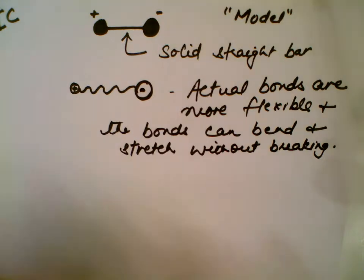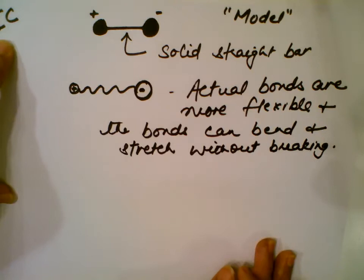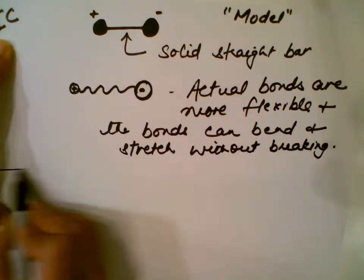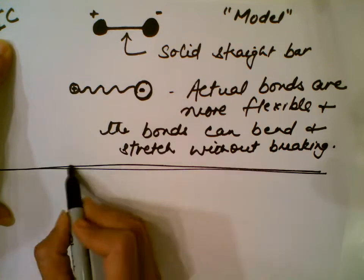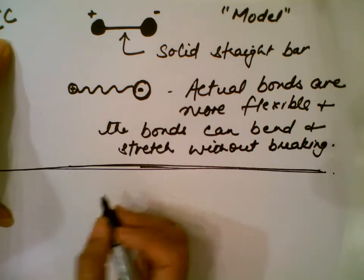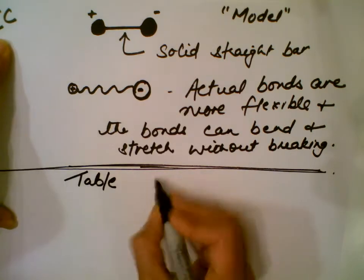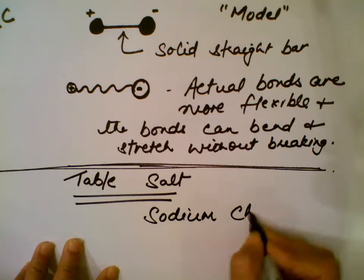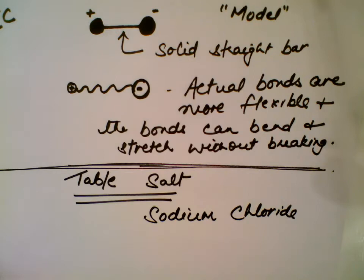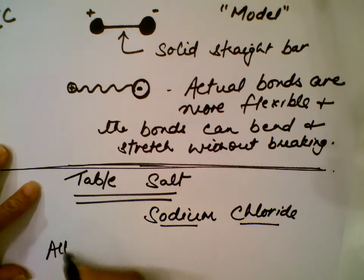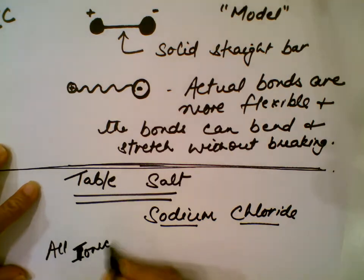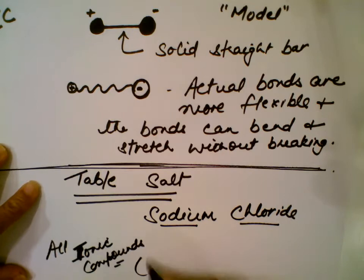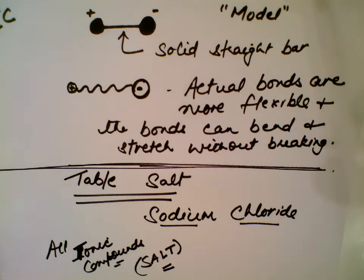Now I'm going to explain ionic bonding with the simplest and most widely used example: salt — the table salt that we all use every day. This table salt's chemical name is sodium chloride. I'll use the chemical name sodium chloride instead of saying table salt, because all ionic compounds are actually salts.